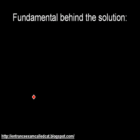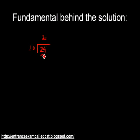First of all, let us see the fundamentals behind the question. Consider the number, say, 24. If you divide this number by 10, then the remainder will be 4, because 10 goes into 20 twice, so you will get 4 as a remainder.